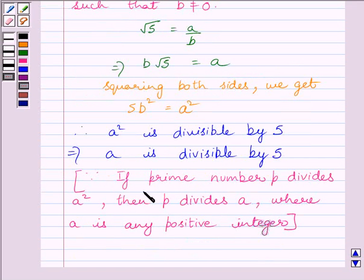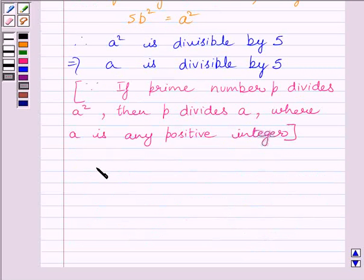This is because if prime number P divides A square, then P divides A, where A is any positive integer. So, we can write A is equal to 5C, where C is any integer.